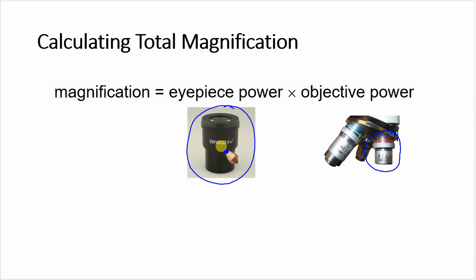In this example, the eyepiece lens is magnifying to the power of 10, 10 times. The objective lens, I can see the number 4 there, so that's magnifying by 4. Quite simple: 10 times 4, we've got a magnification of 40 times.